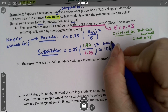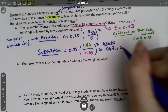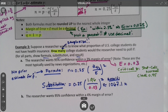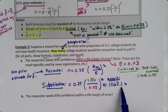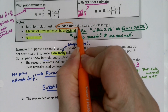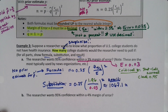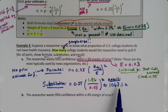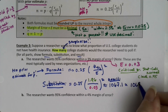We get 1067.1. That's our result, but we can't leave it there — we have to round up. You can't have 0.1 of a college student. For sample size problems, we must always round up to the nearest whole number. You cannot round down or do normal rounding, because if you do you'll lose the confidence or margin of error you were targeting. So the answer is 1068 students.